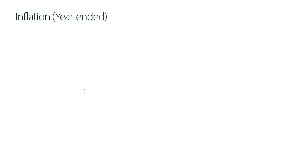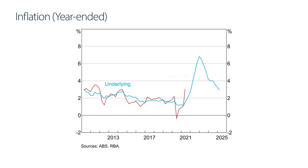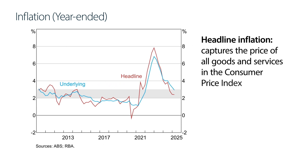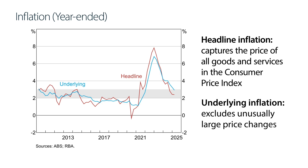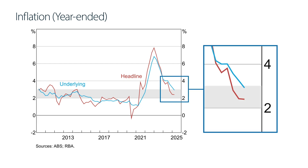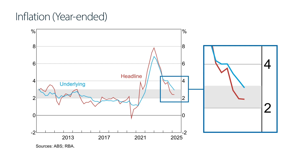And now, inflation. The RBA tries to keep inflation low and stable. To achieve this, we try to keep consumer price inflation between 2% and 3%. There are two key measures of inflation. Headline inflation captures the price of all goods and services in the Consumer Price Index. Underlying inflation excludes unusually large price changes, which means it provides a better understanding of overall inflation trends. Headline inflation was flat in the March quarter at 2.4%, while underlying inflation decreased in the March quarter from 3.3% to 2.9%. This is the first time since late 2021 that underlying inflation has been within the 2–3% target range.